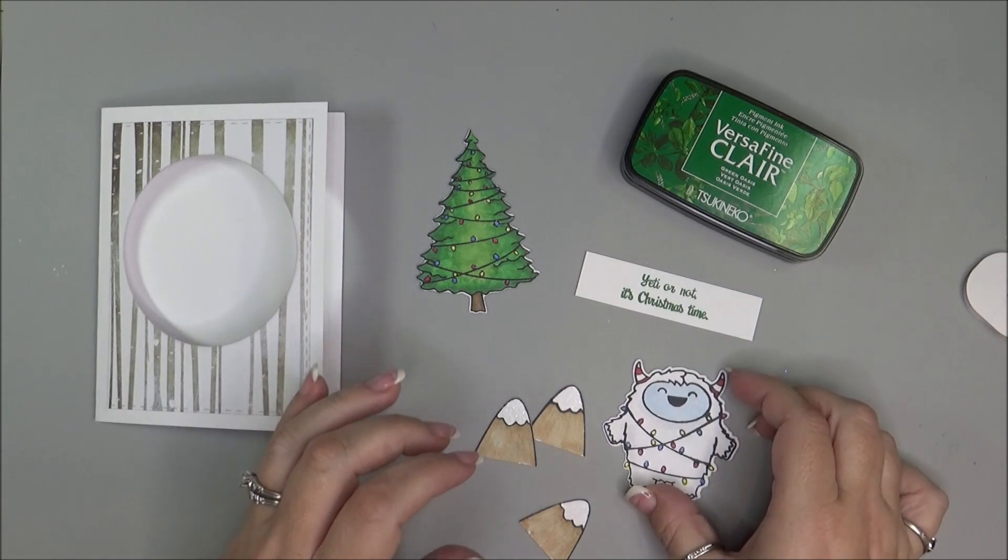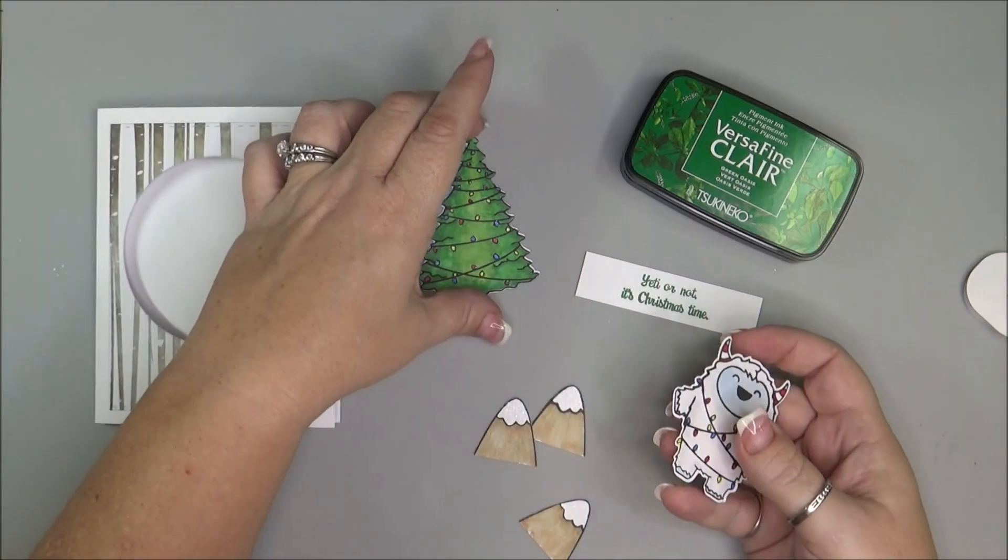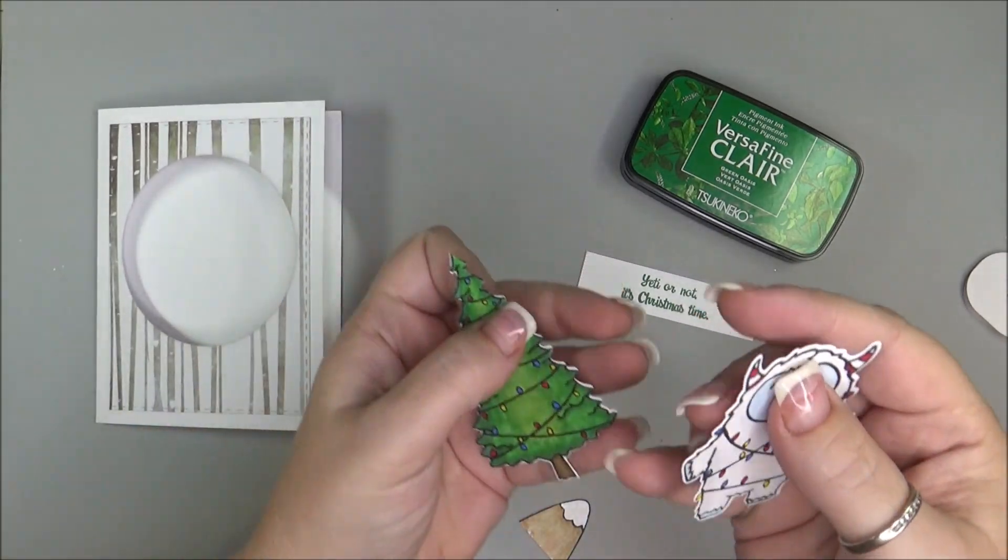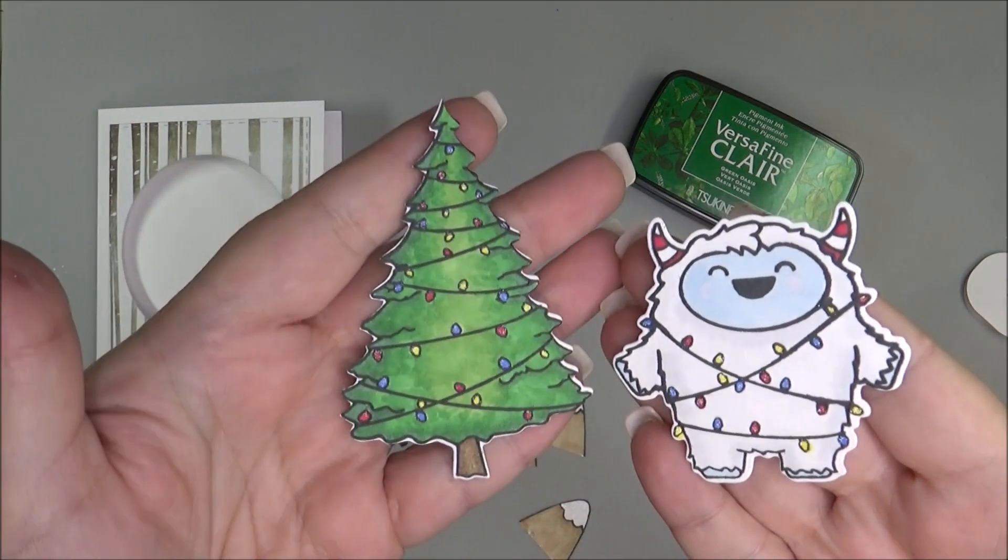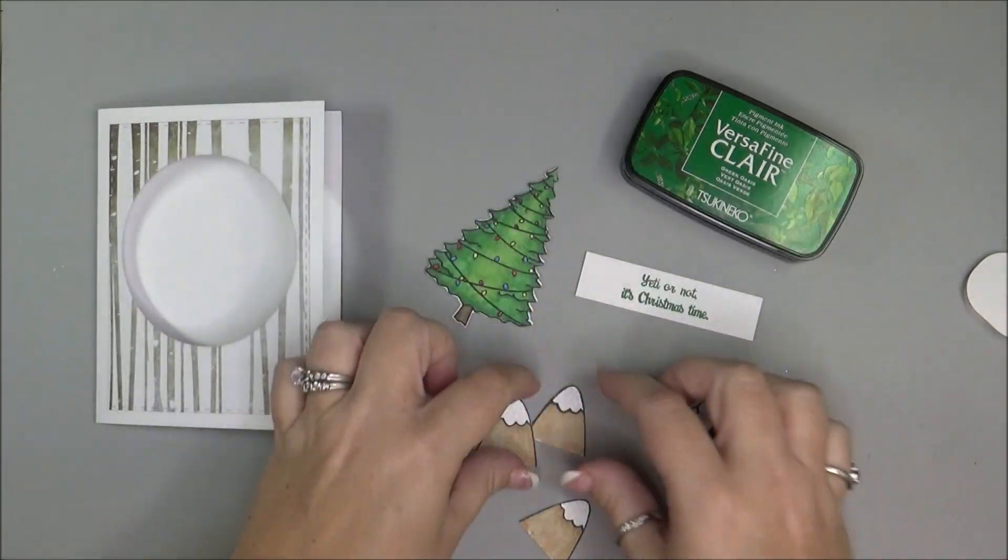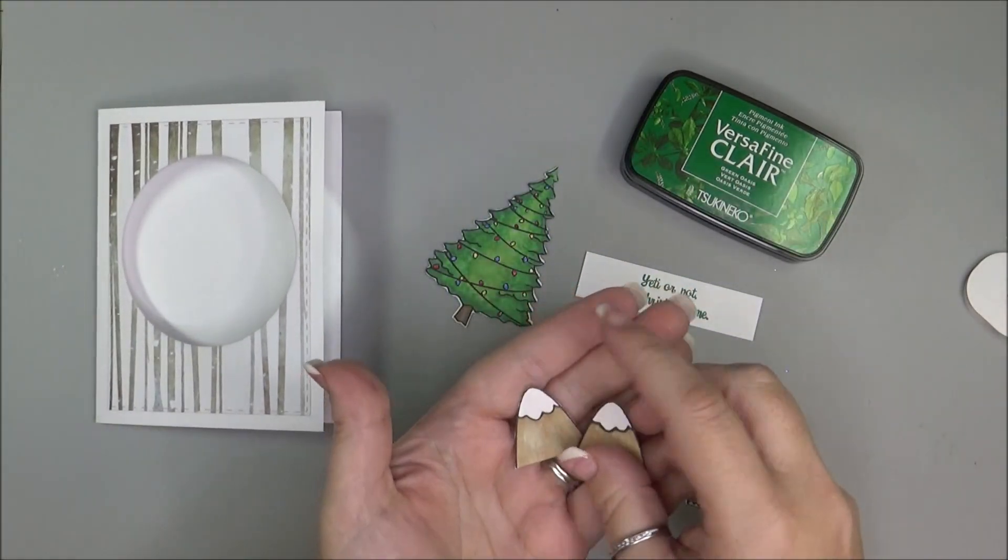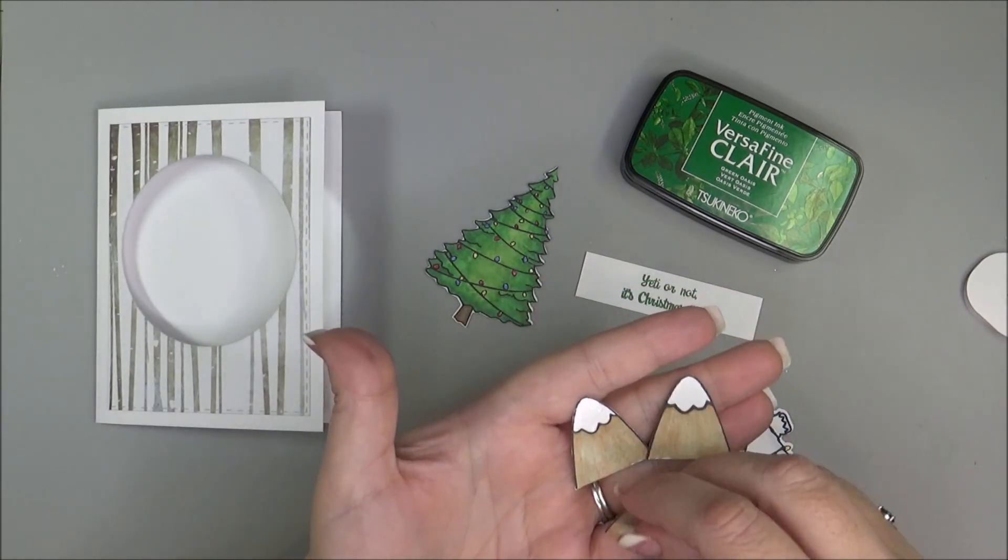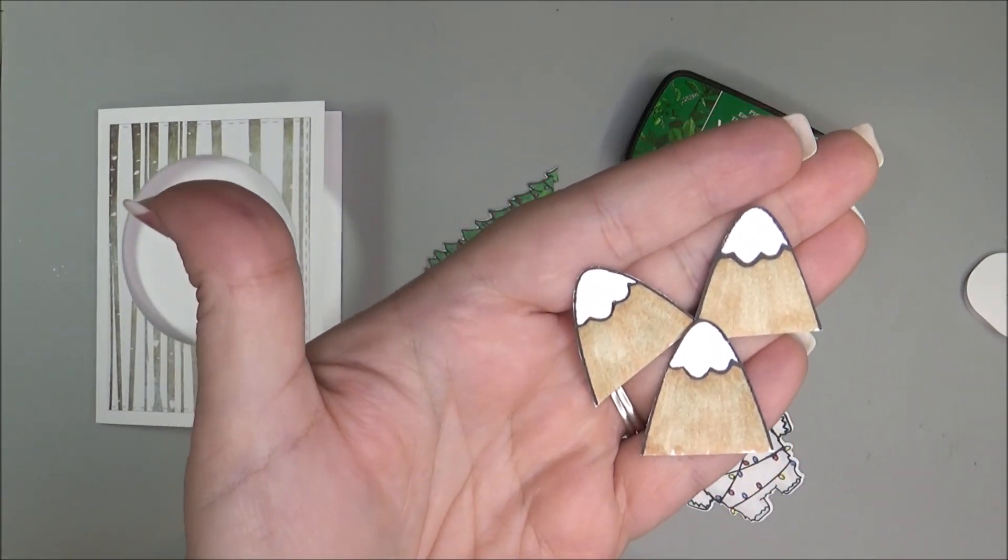Okay, now I got all my little pieces colored and cut out. Here's the Yeti and the tree. And then I also went ahead and colored out some of the mountains that were in that set.